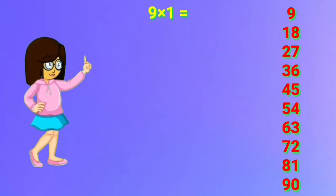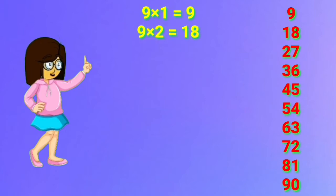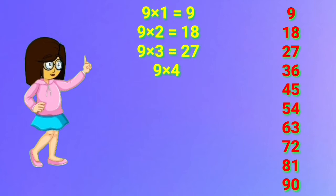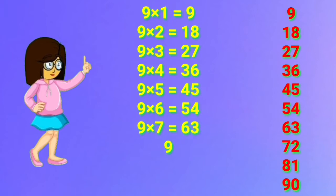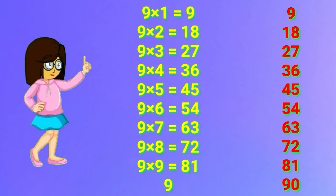9 one's are 9. 9 two's are 18. 9 three's are 27. 9 four's are 36. 9 five's are 45. 9 six's are 54. 9 seven's are 63. 9 eight's are 72. 9 nine's are 81. 9 ten's are 90.